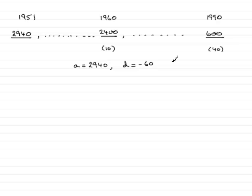Knowing that the series is an arithmetic series, with first term A being 2,940, and we found in another part of the question that the common difference was minus 60. Each term went down by 60 units.